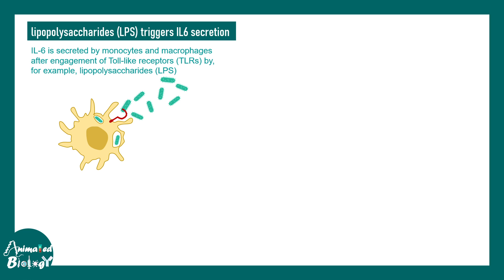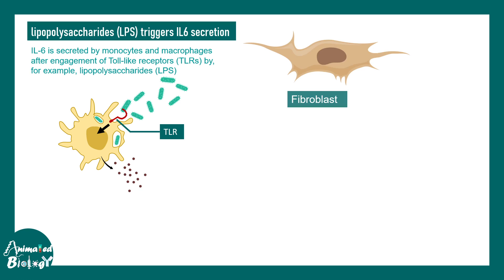Lipopolysaccharide from bacteria is a potent trigger of IL-6 secretion. There are toll-like receptors present on macrophages which recognize these lipopolysaccharides and lead to signaling inside the cell, which leads to secretion of IL-6.